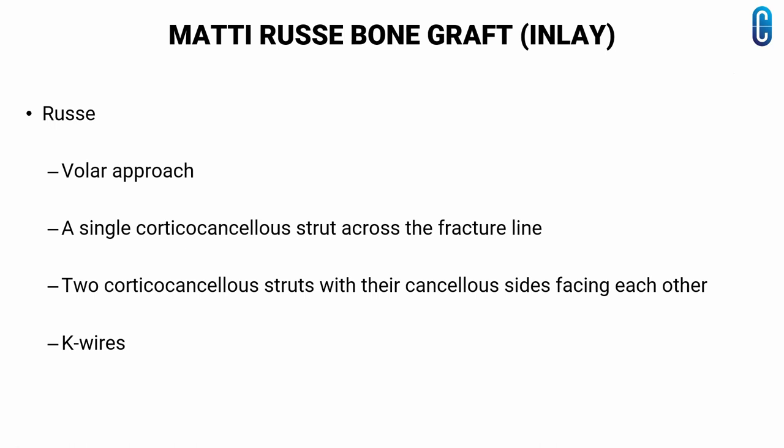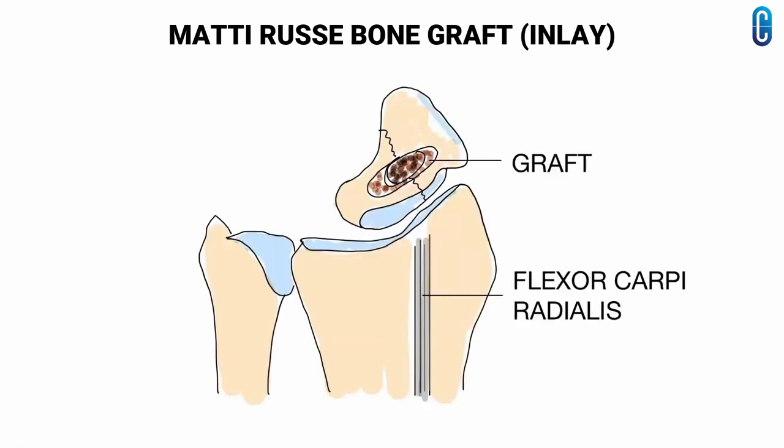K-wires are added to secure the construct. A volar incision is made over the flexor carpi radialis, ending distally at the scaphoid tuberosity. An opening is made in the volar non-articulating cortex. The opposing cavities are excavated and cancellous graft is packed into the defect, and two K-wires are placed distal to proximally.